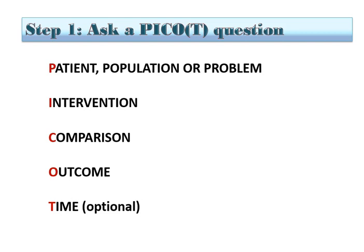When you're starting your search, you're typically going to have to formulate a search question. For evidence-based practice research, that comes in the form of a PICO question, where P stands for patient population or problem, I stands for intervention, C is the comparison intervention, O is your expected outcome, and sometimes time is also used.